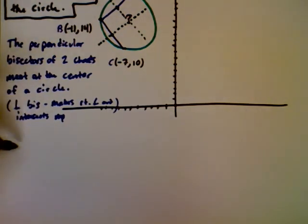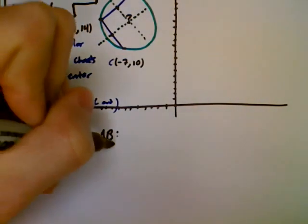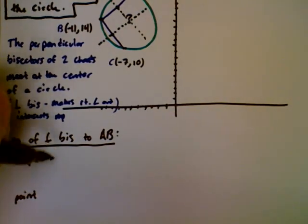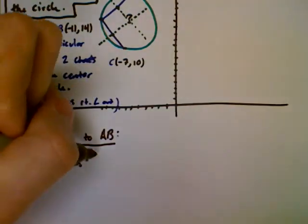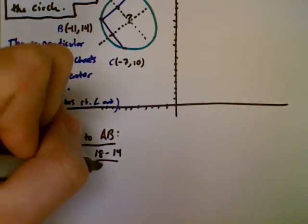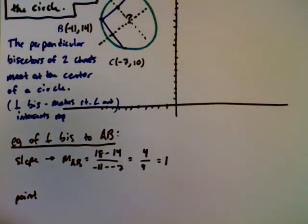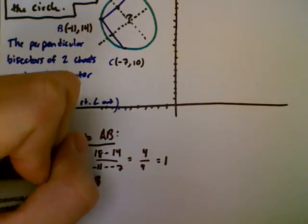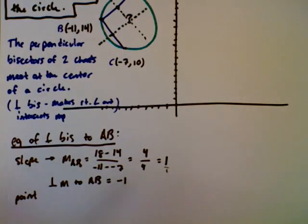For the equation of the perpendicular bisector to AB, we need the slope and a point. The slope of AB is y2 minus y1 over x2 minus x1. I get 4 over 4, which equals 1. Now I need the perpendicular slope to AB — that's the negative reciprocal, which is negative 1.